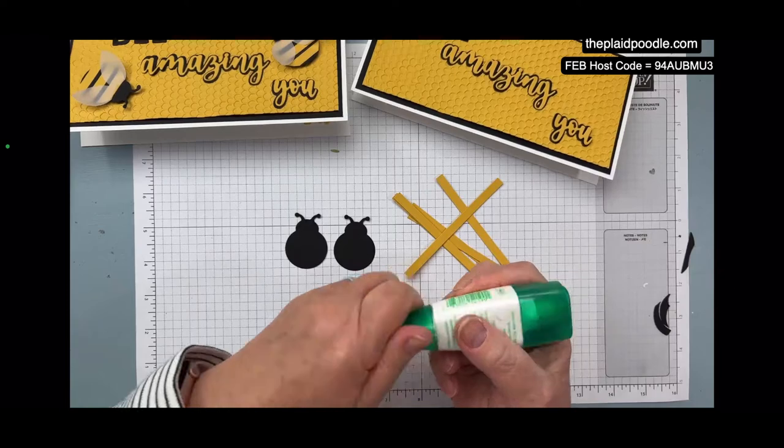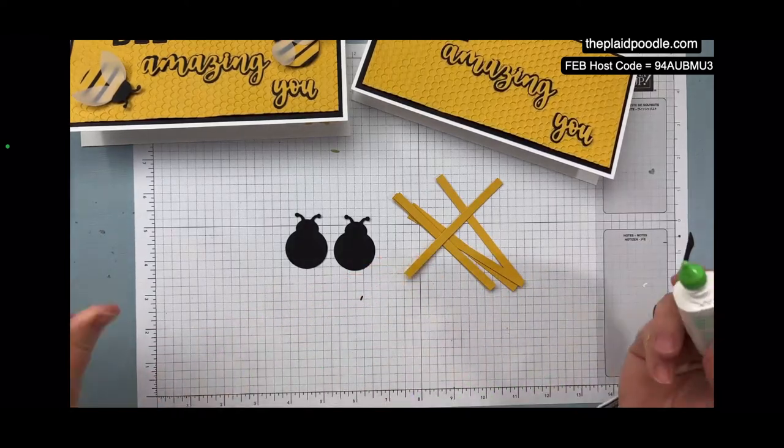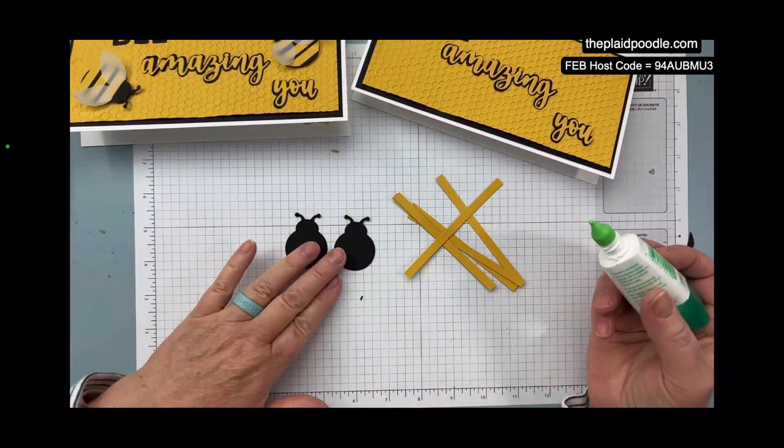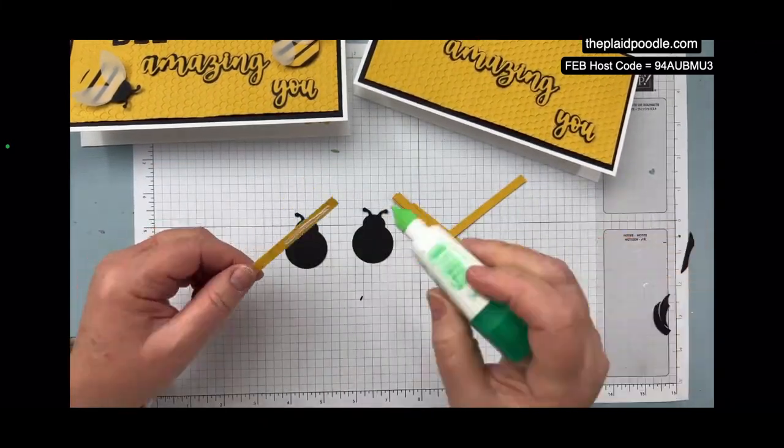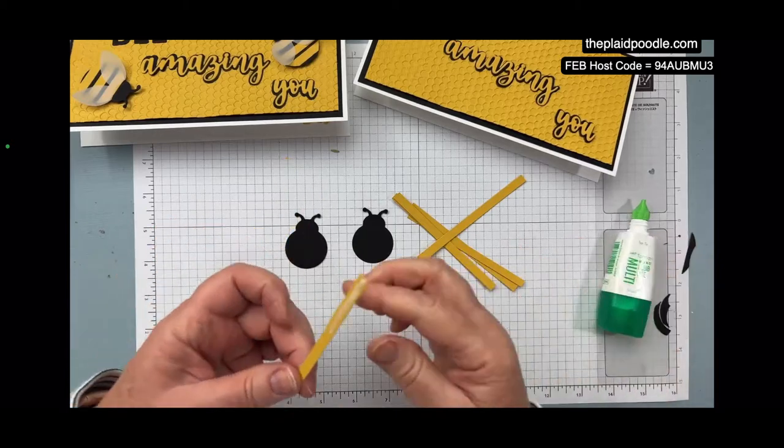They're probably longer than they need to be. These are quarter-inch strips of Bumblebee. I forgot to mention the yellow paper I'm using is Bumblebee, because when you're making a card about bumblebees, you have to use the Bumblebee paper, right?